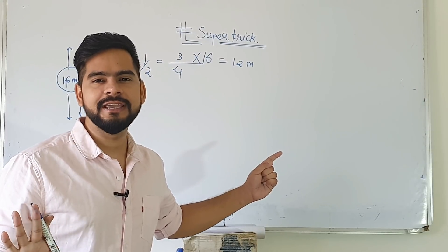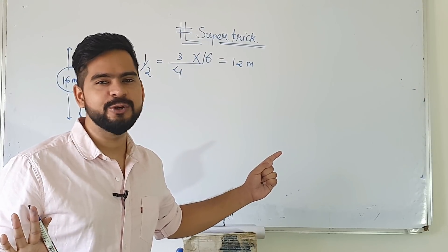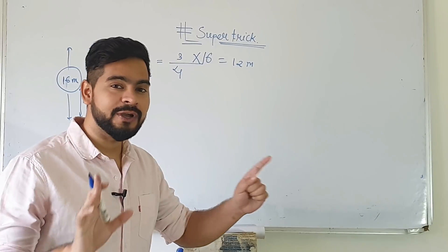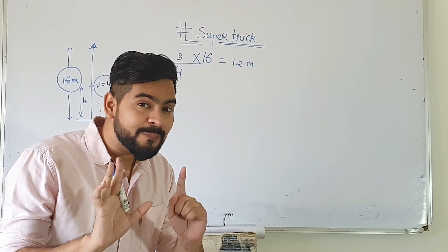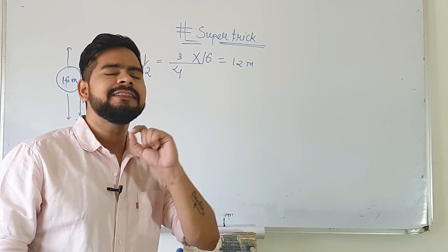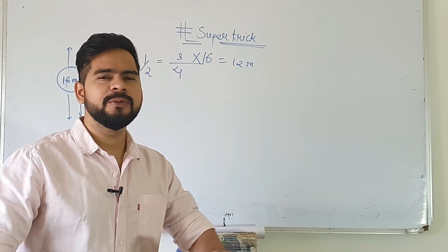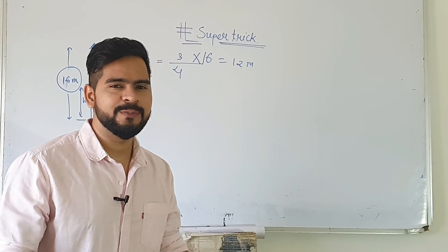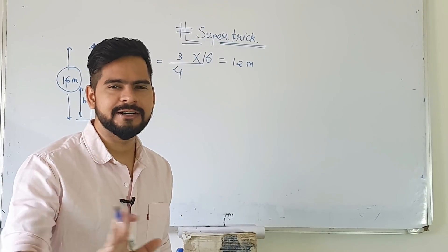No need to plug in anything manually. You can apply this shortcut — 2AD equals V squared minus U squared — in this kind of problem. Every time you will get your answer quickly.